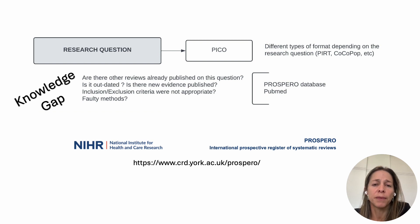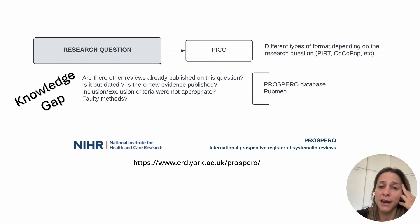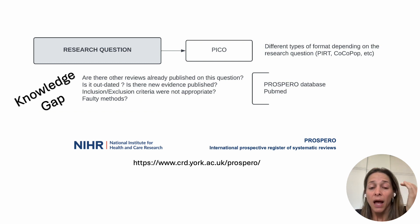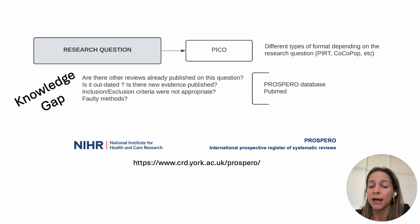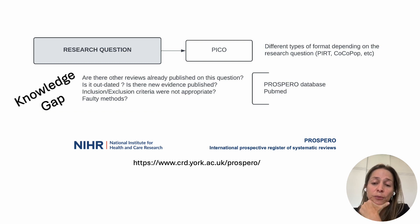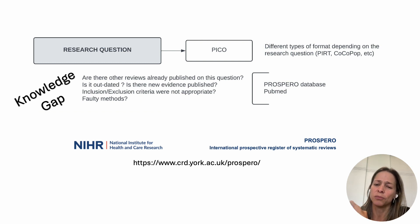Once you have identified your research question in the PICO format, you need to make sure there is not a systematic review already published on this topic. For this, you will check different databases and the PROSPERO database, which is a systematic review protocol registry. If you find a review that has already been published, check if it is out of date, not well conducted methodologically, or if it has different eligibility criteria. If any of these are true, then you can do your systematic review.